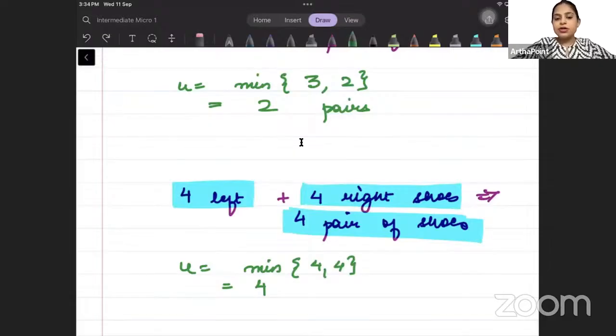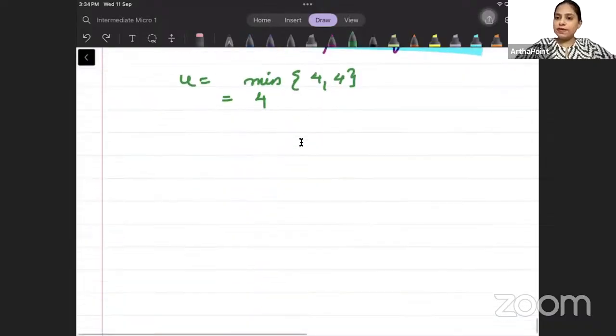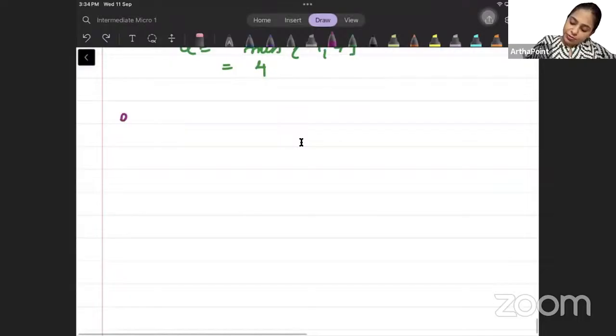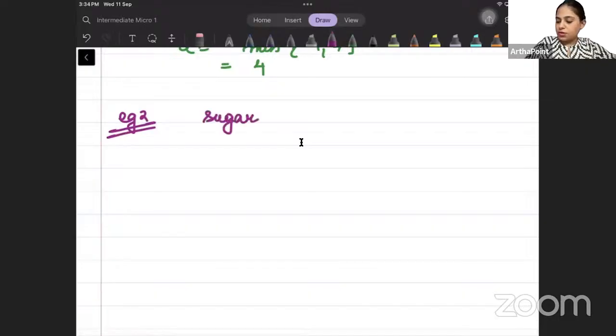But, the ratio that we had was 1 is to 1. But not always the ratio will be 1 is to 1. For example, number 2. If I go ahead and I say sugar and tea.